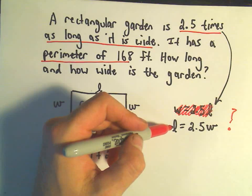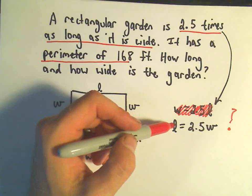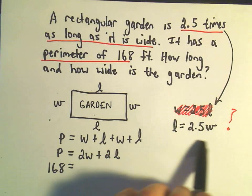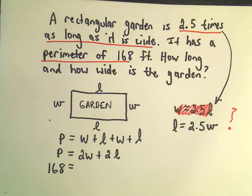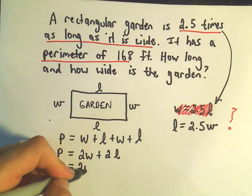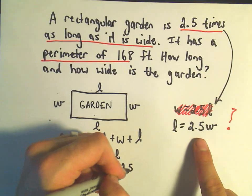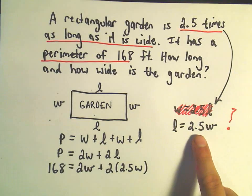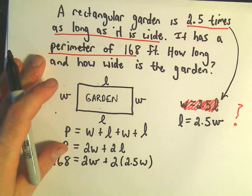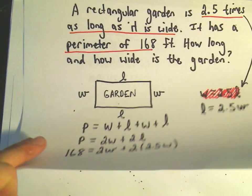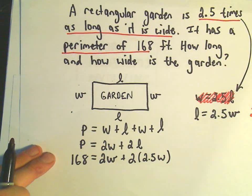So we're going to use this equation, this fact that we can replace, basically we can replace anywhere we see an L, we can replace it with this 2.5 times W. And this to me is kind of one of the hard parts, is kind of sorting out these things and rewriting them correctly. Alright, so what I'm going to do is, so we've got 2W plus 2 times L. But again, we know that L is 2.5 times W, based on what we just said. And now, the whole idea is, well, we've got a linear equation and one variable. We can now just do a little bit of algebra to solve for our variable W.